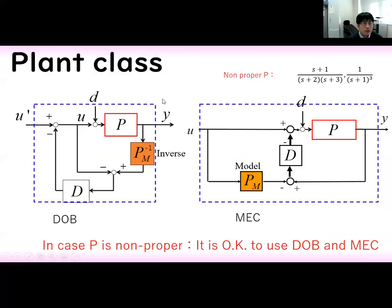We introduce the plant class in this slide. In the case where the plant is given as non-proper, the compensator works well for both cases — Disturbance Observer and MEC.